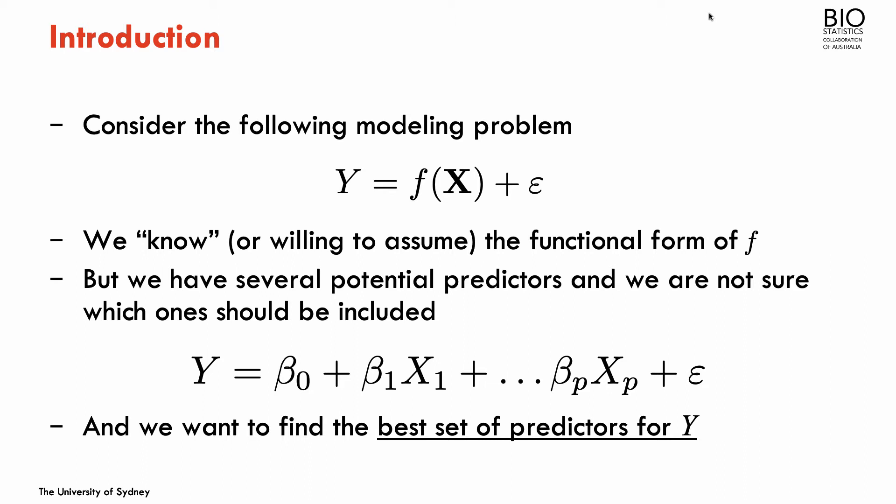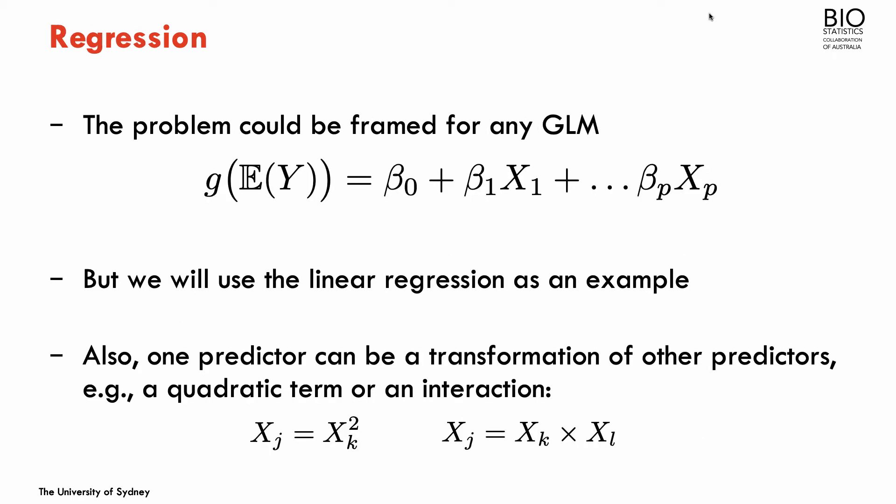So let's consider the following modeling problem. I have the model y equals to some function of a set of covariates, and I'm willing to assume some functional form for f. In this case, we're going to assume a linear model. But we have a large, potentially large set of predictors, or potential predictors for y, and I want to select the best subset of these predictors that predict the outcome y. We could frame this problem in a more general sense for generalized linear models, so any model from the generalized linear family, but we're going to focus on linear regression as one particular example in this family.